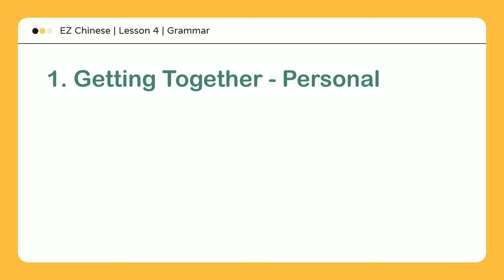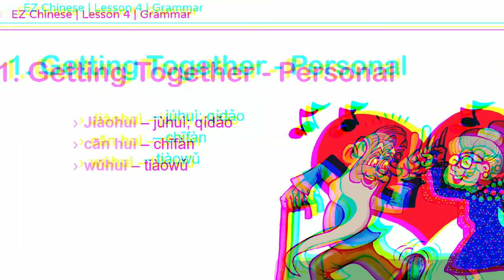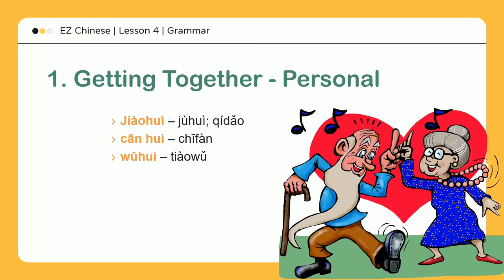教会: Congregate — to pray or worship. Church. 餐会: 吃饭 — A breakfast, lunch, or dinner meeting. Get together to eat. 舞会: 跳舞 — Dancing party. New Year's Eve parties.